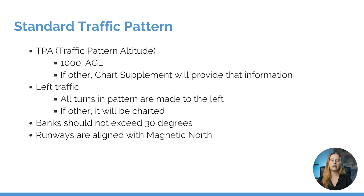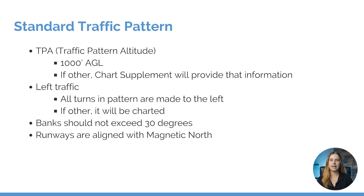When talking about a standard traffic pattern, the TPA, or traffic pattern altitude, is typically 1,000 feet AGL, or above ground level. If it's anything other than standard, that will be charted or displayed in the chart supplement. The standard direction for our traffic pattern is left traffic, meaning all turns in our pattern will be made to the left. If it is a right traffic pattern, it will be charted as such.